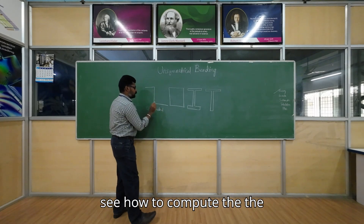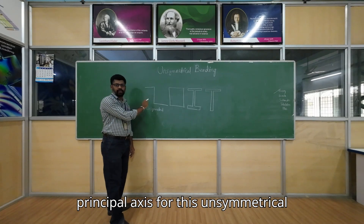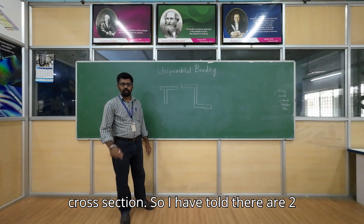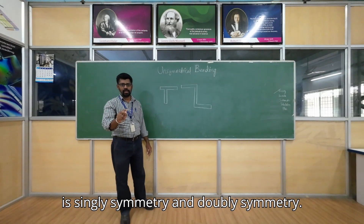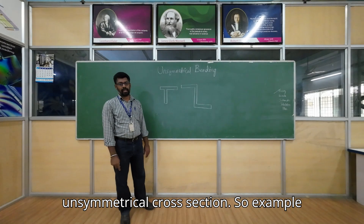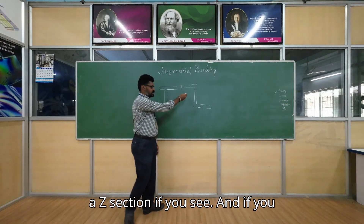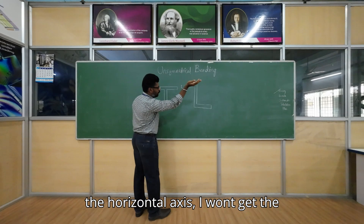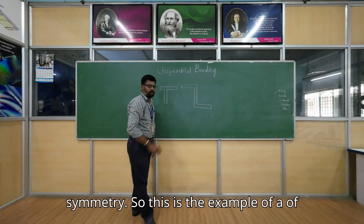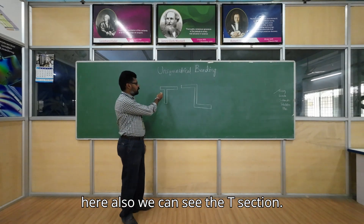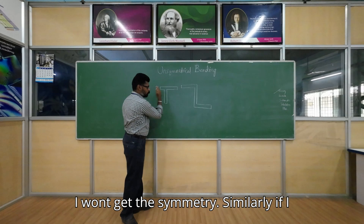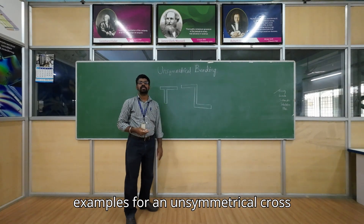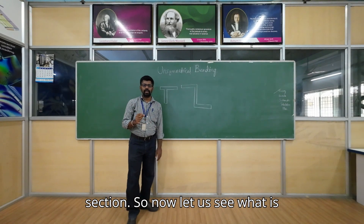In today's experiment we are going to compute the principal axis for an unsymmetrical cross section. A Z-section is an example: if you cut along the vertical axis you don't get symmetry, and similarly along the horizontal axis. So the Z-section and a skewed T-section are both examples of unsymmetrical cross sections.